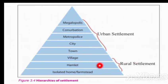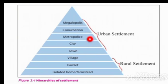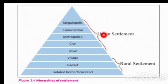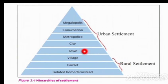Village, hamlet, and isolated home contain a very small number of people and are sparsely populated. The main economic activity is agriculture. From town to megalopolis, these areas include non-agricultural economic activities like manufacturing. Most educated people are concentrated in urban centers. So settlements are classified into rural — village, hamlet, isolated home or farm — and urban: town, city, metropolis, conurbation, and megalopolis.